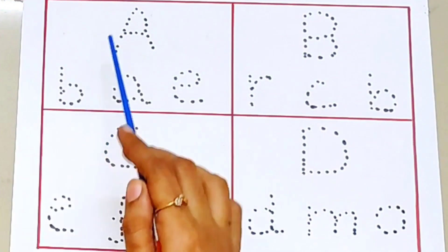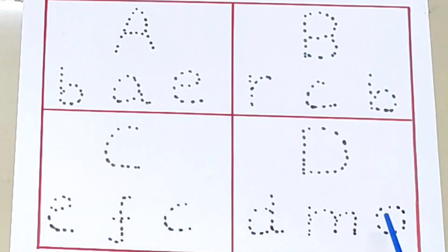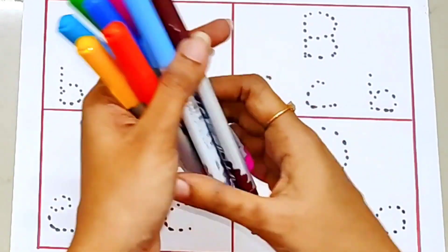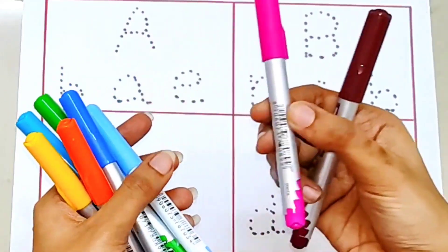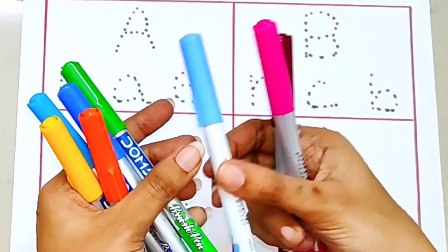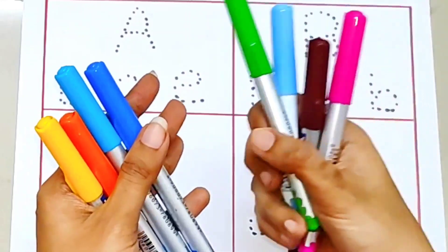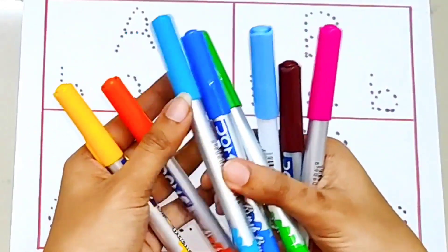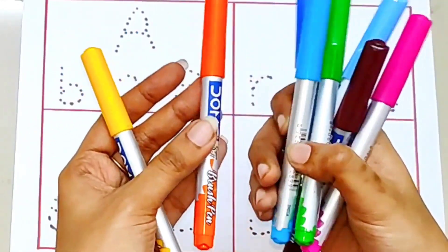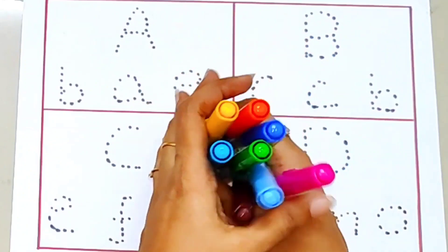In this video, let's learn ABC alphabets. Let's learn some colors: brown color, pink color, light blue color, green color, dark blue color, sky blue color, orange color, and yellow color.